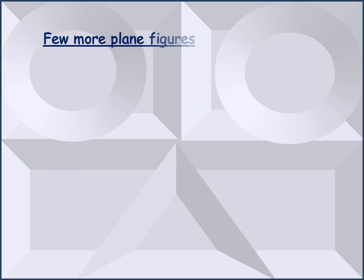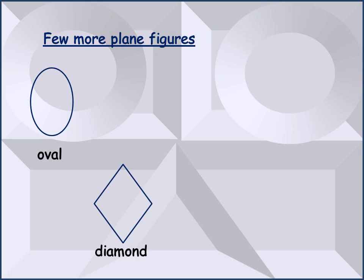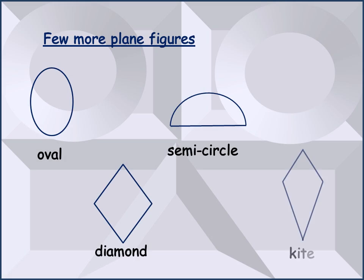Apart from square, rectangle, triangle, and circle, there are a few more plane figures such as oval, diamond, semi-circle, and kite.